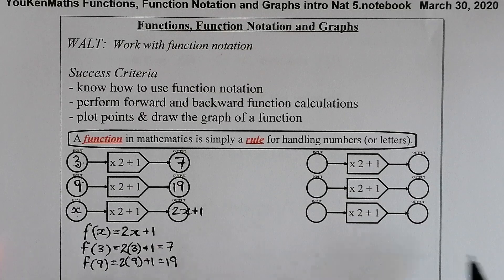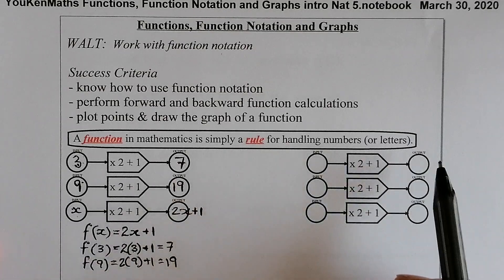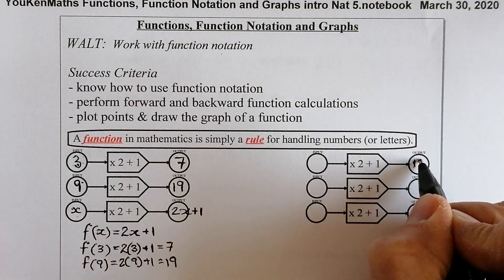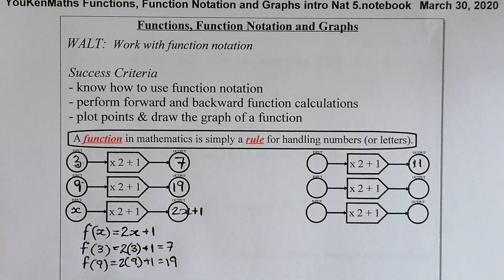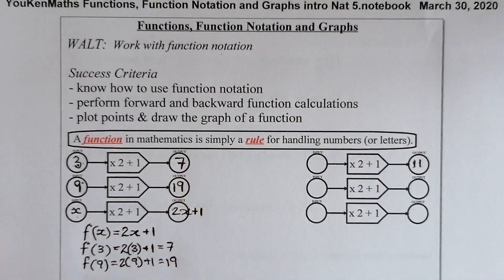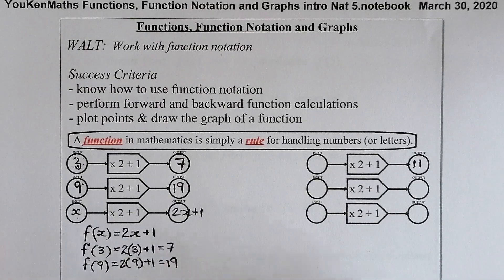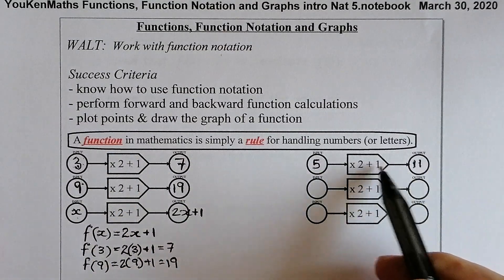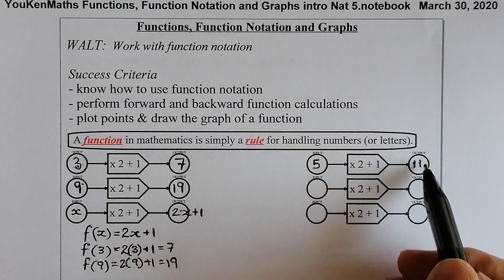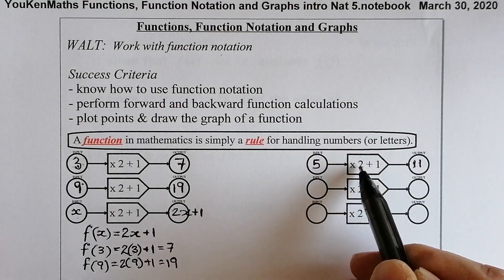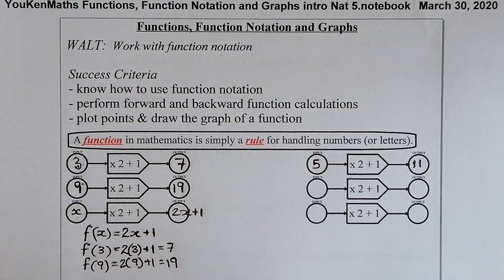Quite often we're asked to find the input when we're given an output. So what if I have 11 coming out of that number machine? Using the same function f of x equals 2x plus one — what would have gone in? It's going to be five. To work backwards: take 11, subtract one to get 10, then divide by two to get five.